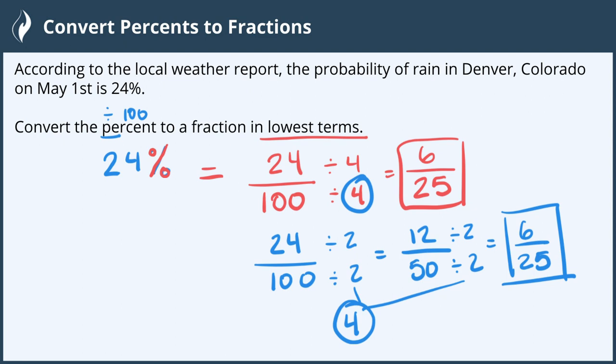You can divide by whatever you see as a factor of both the numerator and denominator until you can't simplify it any further. And that is our reduced lowest term fraction for the probability of 24%. We're all done.